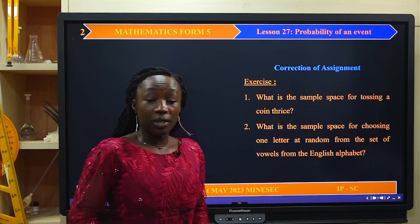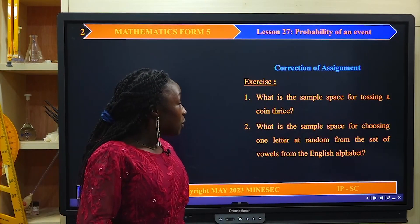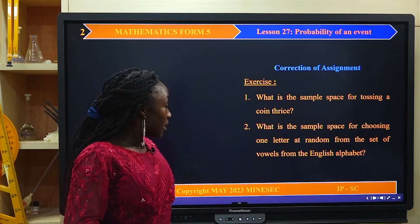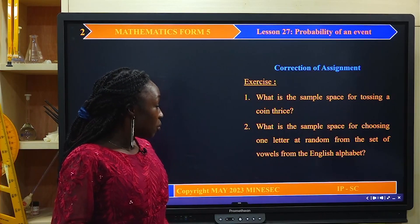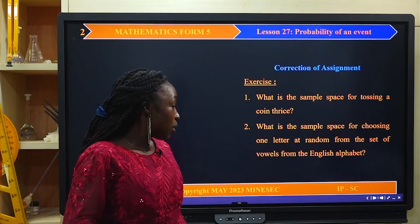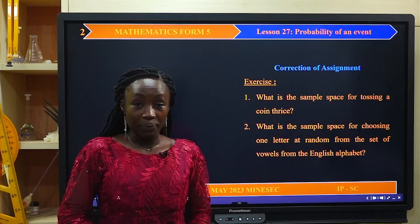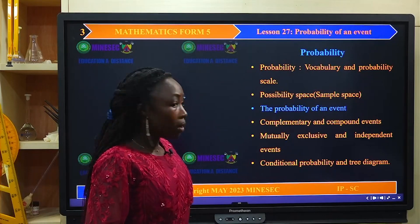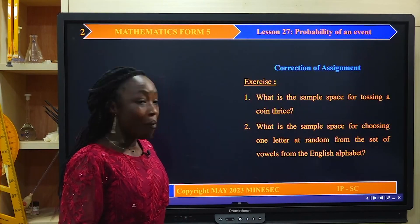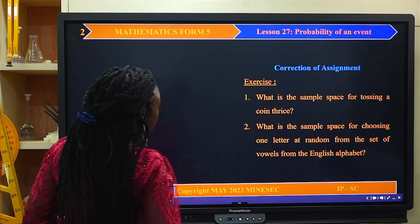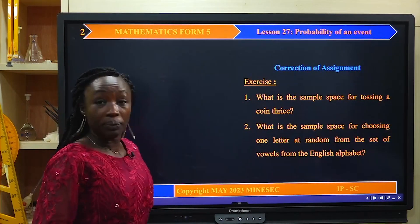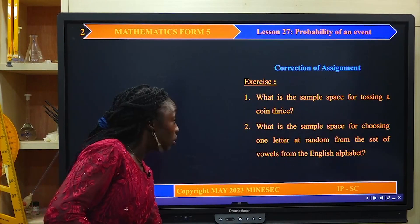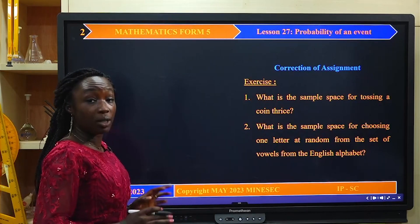We have two questions. First: what is the sample space for tossing a coin thrice? Second: what is the sample space for choosing one letter at random from the set of vowels from the English alphabet? We start with the first question. To approach this, it will be easier for us to use a table.